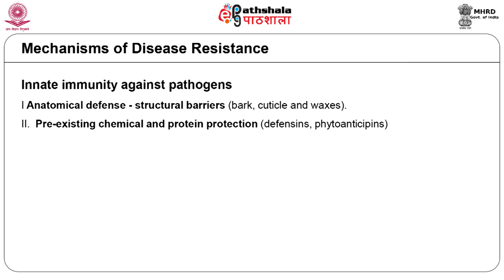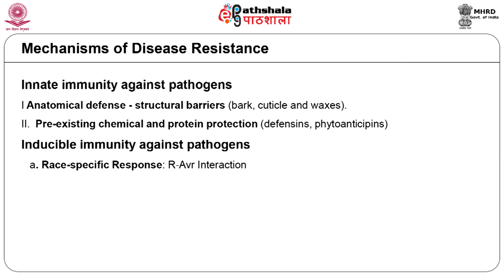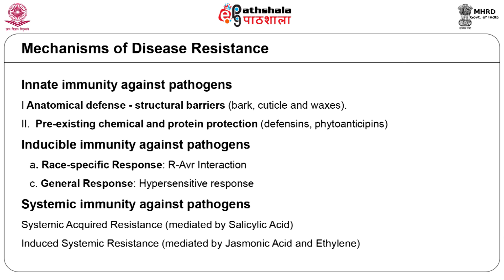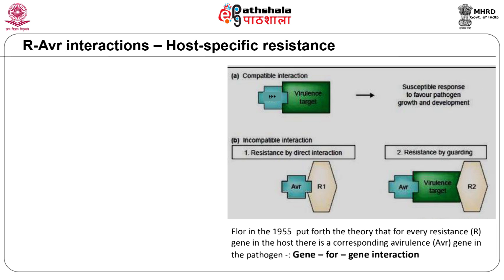When the second line of defense is also overcome by the pathogen, inducible defense mechanisms are evoked. These include race-specific responses through recognition of a pathogen avirulence gene product (AVR) by a plant resistance or R gene, the hypersensitive response, and systemic responses which include systemic acquired resistance (SAR) and induced systemic resistance (ISR). The R-AVR interactions constitute a form of inducible defense response and are seen to be specific for a particular race of the pathogen, contributing to what is known as vertical resistance.